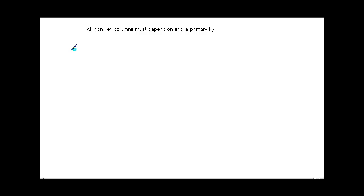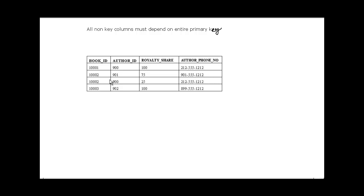Now let's go to the second normal form. The second normal form states that all non-key columns must depend on the entire primary key. We have a table with book ID, author ID, royalty share, and author phone number. The primary key here is a composite primary key consisting of both book ID and author ID — meaning the combination of book ID and author ID is unique. You can have duplicate book IDs and duplicate author IDs, but the combination is unique.